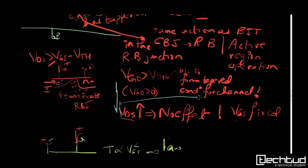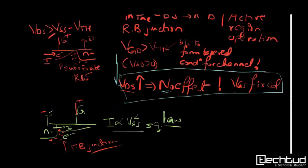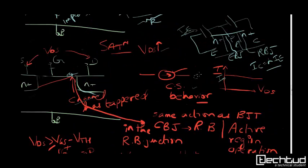But there is some small deviation because of channel length modulation effect. You can see this is source, this is gate, and ID is proportional to VGS square, that is square law. That's a forward bias junction. Gate is at higher potential compared to source. In NPN BJT, this will behave like emitter forward bias junction. But here it is not proportional to exponential VGS, it is proportional to square law equation.